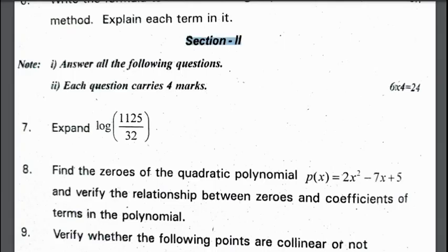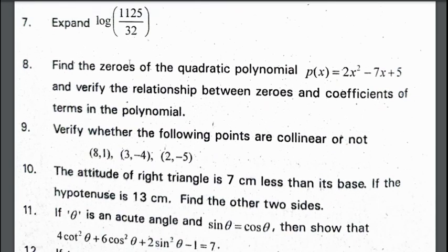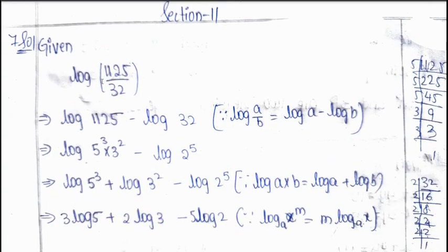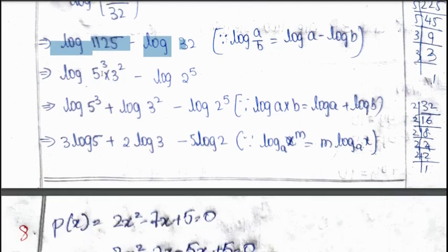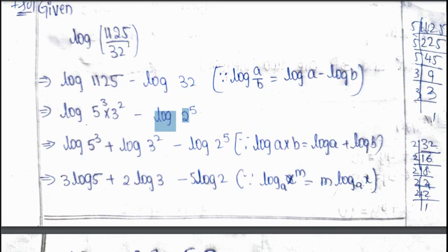Now, we will see section 2. In section 2, we need to attempt all the questions. Six questions will be there, each question carries 4 marks, total marks 24. Expand log 1125 by 32. Log 1125/32 can be expressed as log(5³ × 3²) - log 2⁵. Formula is log A/B = log A - log B. 1125 can be expressed as 5³ × 3² and 32 as 2⁵. We know the formula log A × B = log A + log B. Log A^M = M log A. Log 3² is 2 log 3. Log 2⁵ is -5 log 2. So, we have expanded log 1125 by 32 as 3 log 5 + 2 log 3 - 5 log 2. While you are expanding, don't forget to write the formulas at the right side.